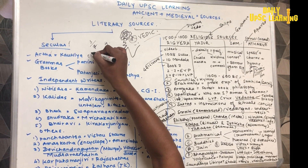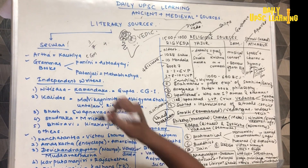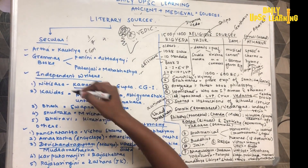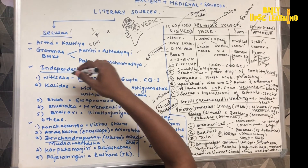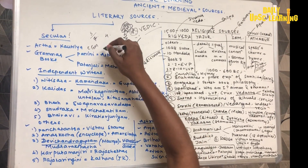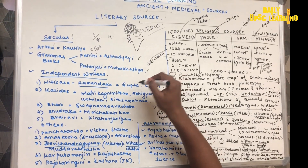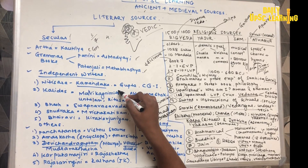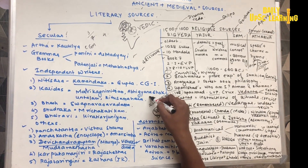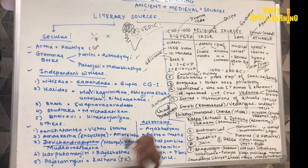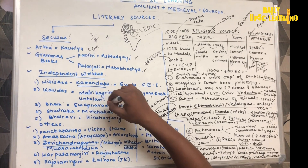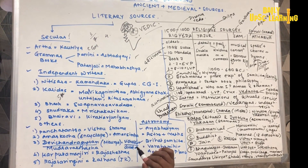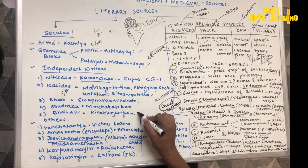For secular sources: Arthashastra was written by Kautilya, who was the minister of Chandragupta Maurya. Then there were grammar books like Panini's Ashtadhyayi and Patanjali's Mahabhasya. Independent writer Kamandaka wrote Neeti Sara during the Gupta period under Chandragupta I. Kalidasa wrote Malavikagnimitra, Abhijnanashakuntalam, and Ritusamhara. Bhasa wrote Svapnavasavadattam — this is important. Shudraka and Bharavi wrote Kiratarjuniyam.